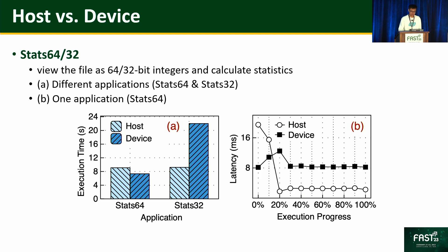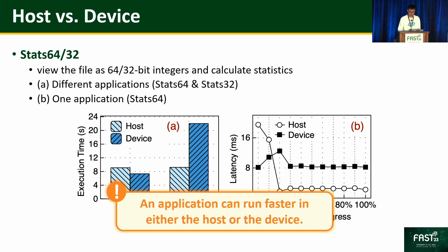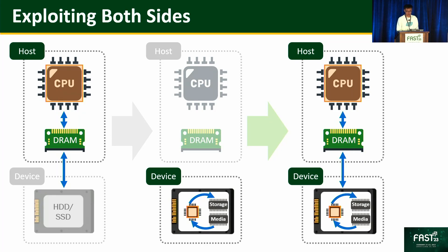Here is an experiment where we compare how two applications, State64 and State32, perform on the host and the device. As shown in subfigure A, State64 runs faster on the device; however, State32 runs faster on the host. Subfigure B shows the latency throughout the execution progress of State64 — it runs faster on the device at the beginning, but then faster on the host. In a nutshell, an application can run faster on either the host or the device. Therefore, we should exploit both.